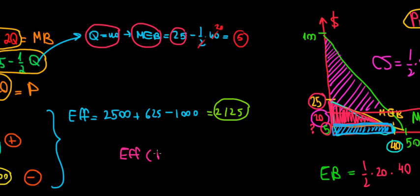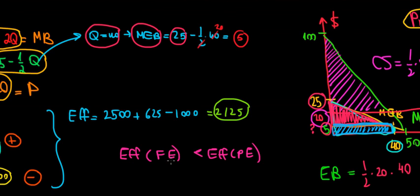So the efficiency under free education is lower than under private education. Under free education, students don't take into account any costs — they just over-consume it. Under private education, students consider whether the value they get from education is worth the cost. Free education leads to too much investment because it is subsidized. Given this data, private education is the better option, though a subsidy could get us to the social optimal level.